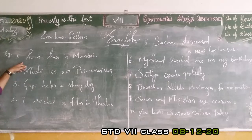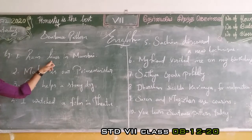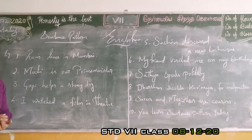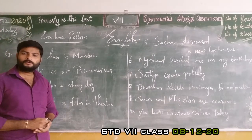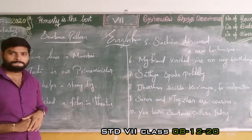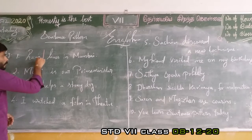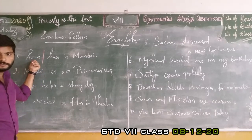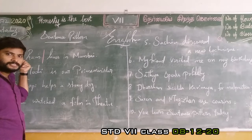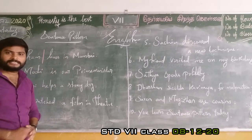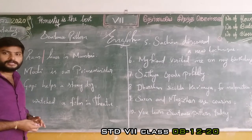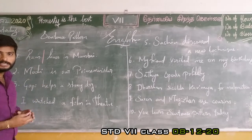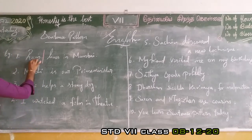First example: 'Rom lives in Mumbai.' Who is the doer here? What is the head word of the sentence? Rom — because about this person only we are speaking, and other parts of the sentence describe him. So, Rom is the doer here. So, it is called subject.